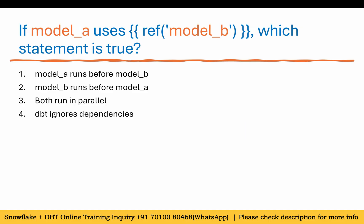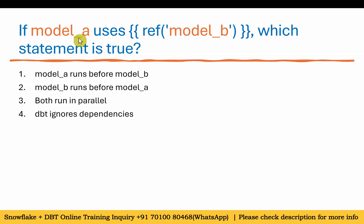If model A uses a reference to model B, which statement is true? Options: model A runs before model B, model B runs before model A, both run in parallel, or DBT ignores dependencies. We saw two projects where a second model referenced a first model. Since model A references model B, the answer is two: model B runs before model A.